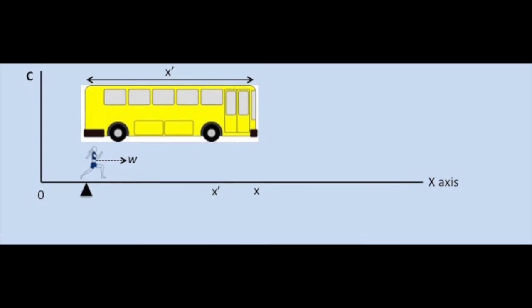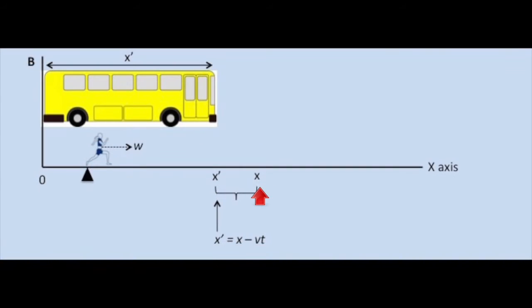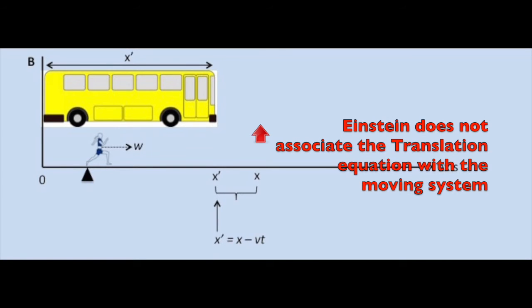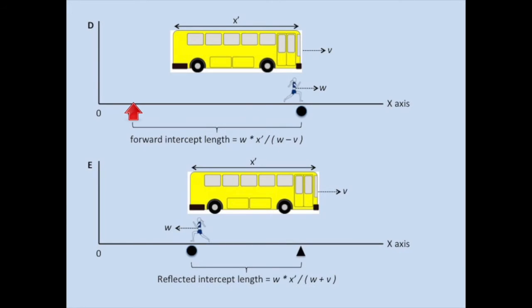So now you understand something that Einstein didn't. This is where he makes several critical mistakes. First, he forgets that he used the translation equation in reverse to find the length of the moving system, and that the moving system was at position x at time t. He conveniently disregards this fact.